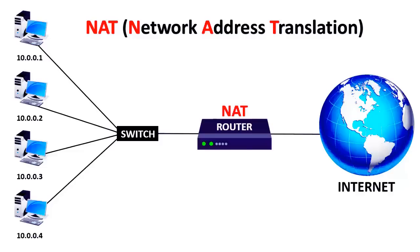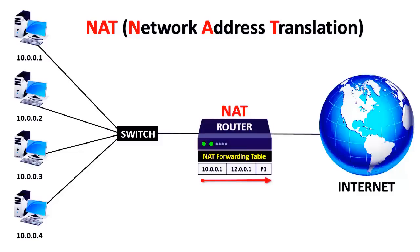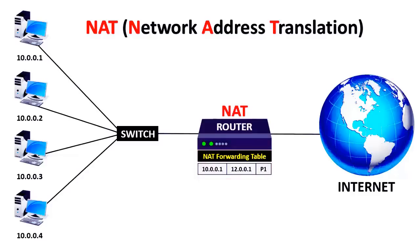Now let's concentrate on NAT. Whenever PC1, assigned with the private IP address 10.0.0.1, wants to access the internet, it will first send the request to the router. The router is going to convert this private IP address into public, add a unique port number to it, and save this information to its NAT forwarding table. After that, it will forward the request to the internet. With the help of the port number, it will be easy for the router to remember which device requested the packet. When the router receives the reply from the internet, it checks its NAT forwarding table, converts the public IP address back into private, and sends the packet to the requested PC. This is how the entire concept of NAT works.